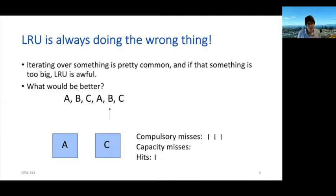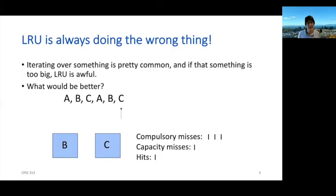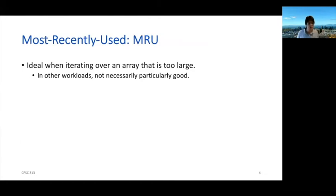Then I move to B and now I have a miss. What you might realize is that the ideal thing to do here is to kick out the object I just touched. So I kick out A, take the miss for B, but when I move ahead to C, I get another hit. This policy is actually called MRU — most recently used. It turns out that when you're iterating over a set of items or an array that's just too large to fit in the cache, MRU is actually a really good solution.